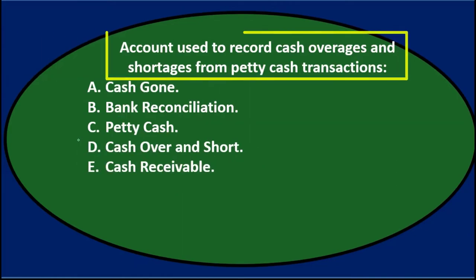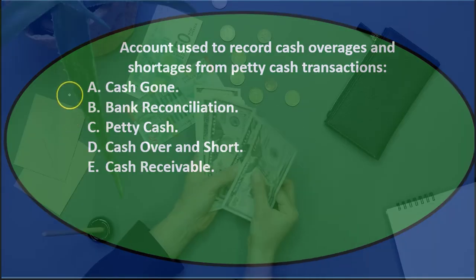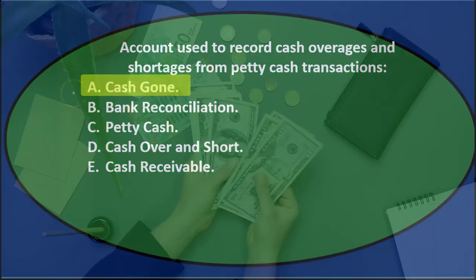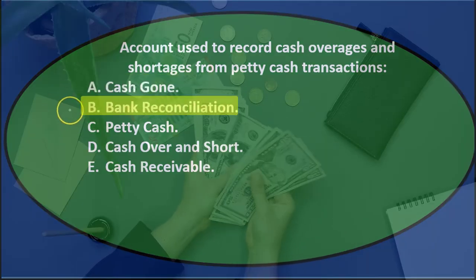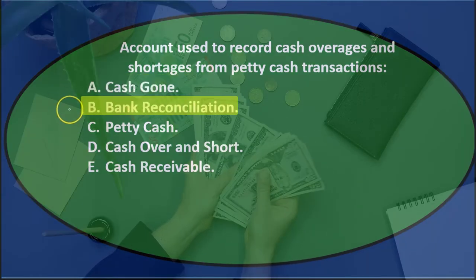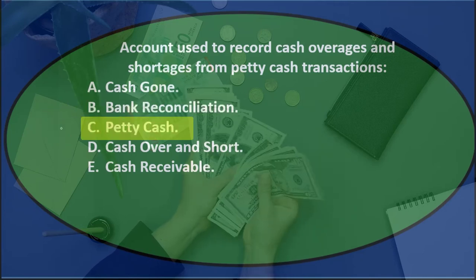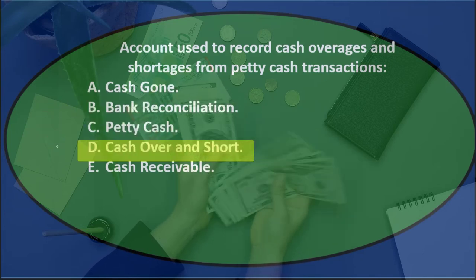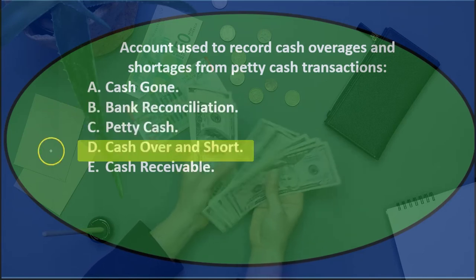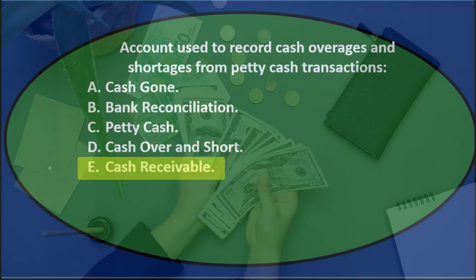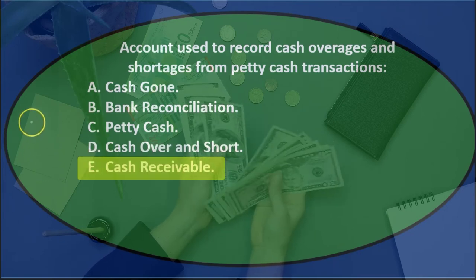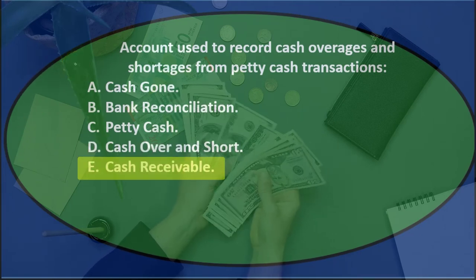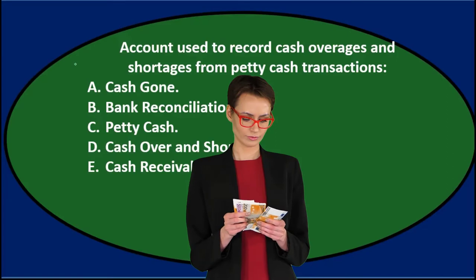Next question: Account used to record cash overages and shortages from petty cash transactions. A, cash gone. B, bank reconciliation. C, petty cash. D, cash over and short. E, cash receivable. We'll read through and cross them off with the process of elimination.